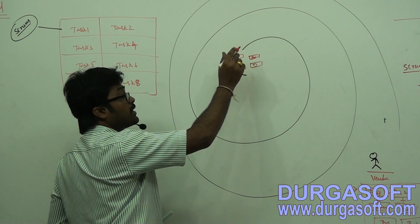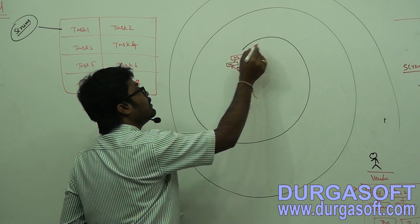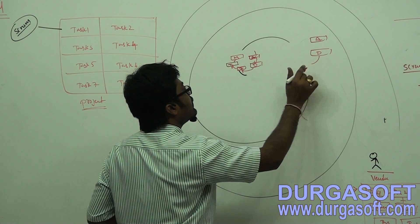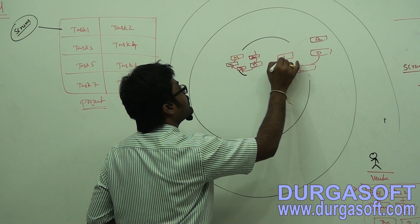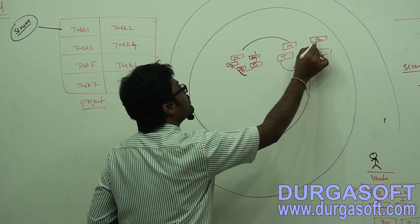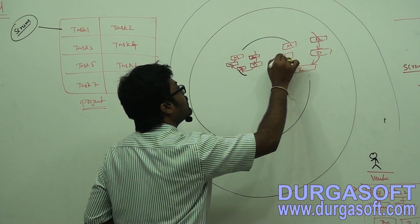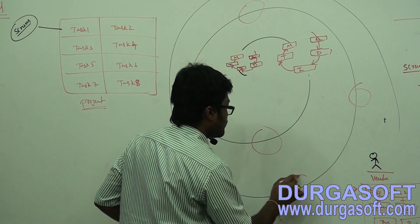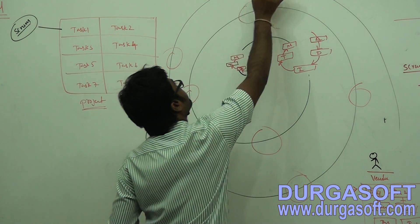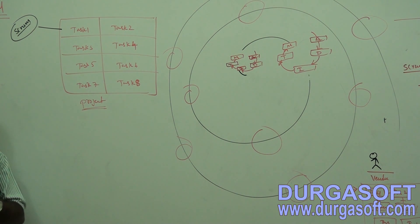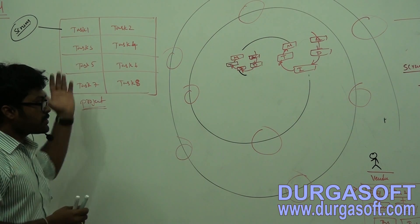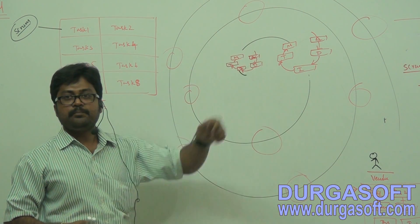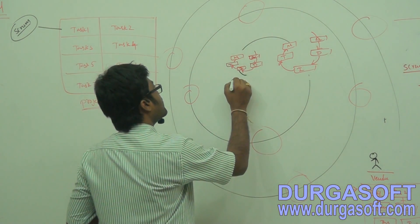After completion of one task, again one more iteration starts: analysis, designing, implementation, testing, maintenance. These iterations continue until completing all the tasks. Up to however many iterations you have, those many iterations must be completed — scrum 1, scrum 2, scrum 3, scrum 4, scrum 5. Each one is called one scrum.